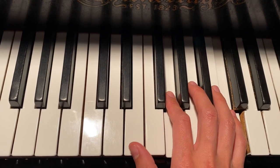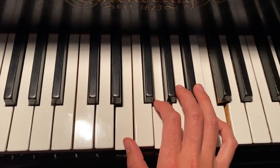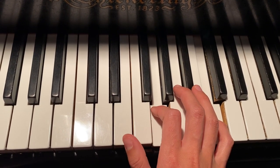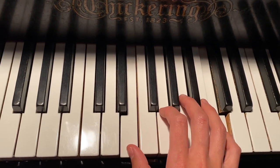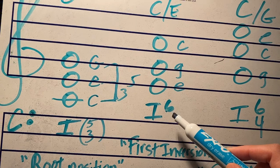And E is on the bottom. So this makes the chord less stable. The distance from the bottom note to the middle note is a third, and the distance from the bottom note to the top note is a sixth. So you'll see it written in Roman numeral analysis as a one-six chord.